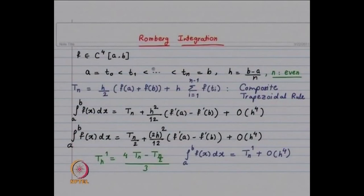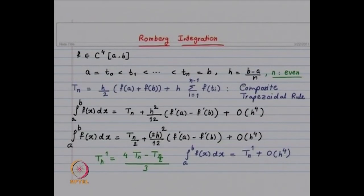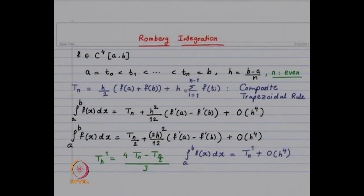Our function f is four times continuously differentiable. We look at a uniform partition of interval [a, b]: t₀, t₁, …, tₙ are equidistant points. h is the length of each sub-interval, which is (b − a)/n. In addition, let us assume that n is even. The composite trapezoidal rule associated with this partition has weight h/2 at the two endpoints — h/2 · f(a) + f(b) — and weight h at the interior partition points t₁, t₂, …, tₙ₋₁.